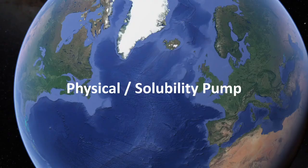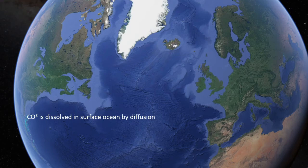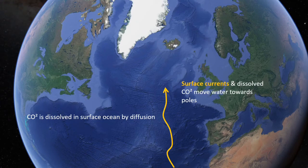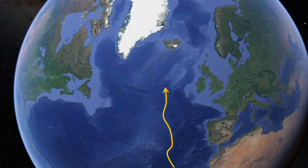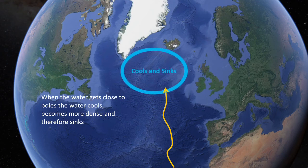Now for the physical or solubility pump. CO2 is diffused into the surface current, and on a global scale the ocean currents that move water around also move the carbon with them. The surface current moves from the equator towards the poles. When this surface current, full of CO2, reaches near the poles, the water cools down, becomes more dense, and dense water sinks — just as dense air would sink. So when the surface current reaches that area, it cools significantly and sinks downward.